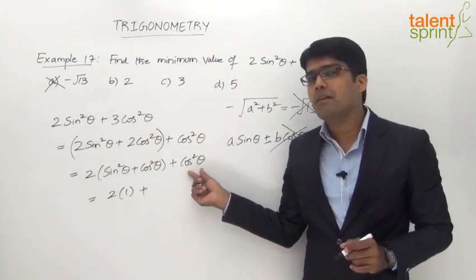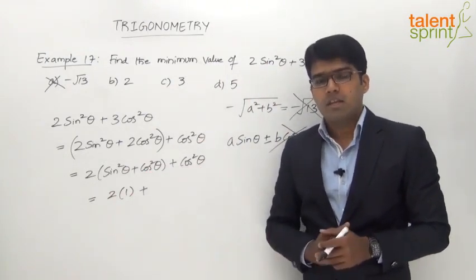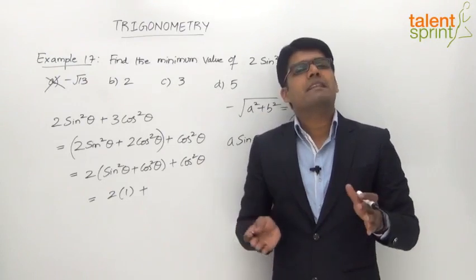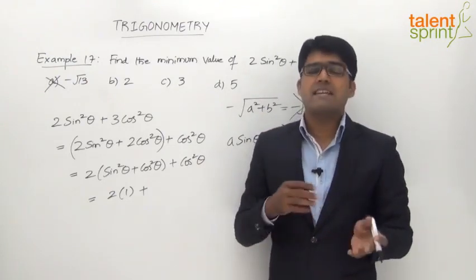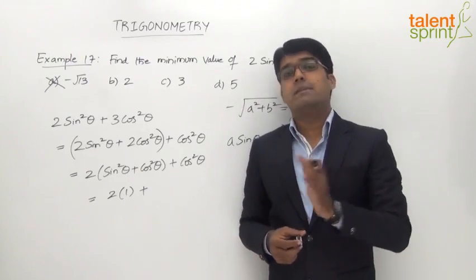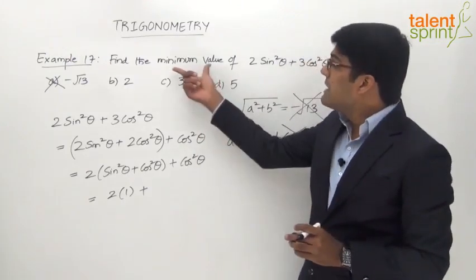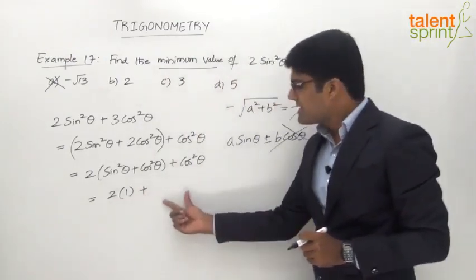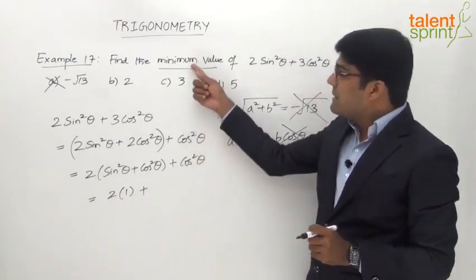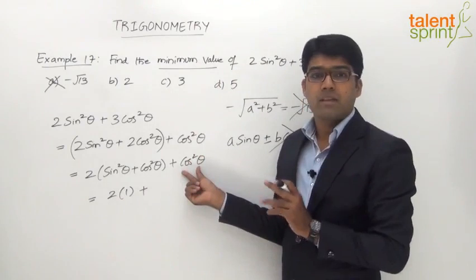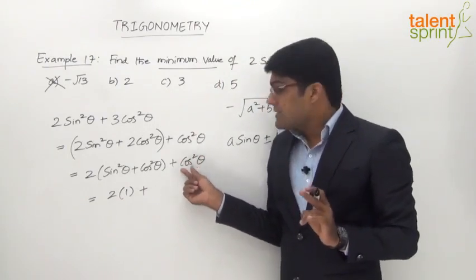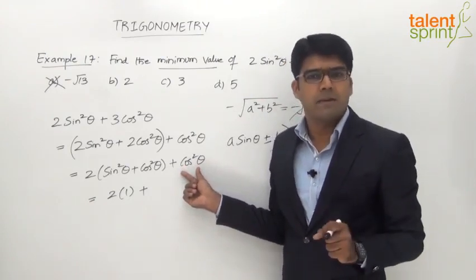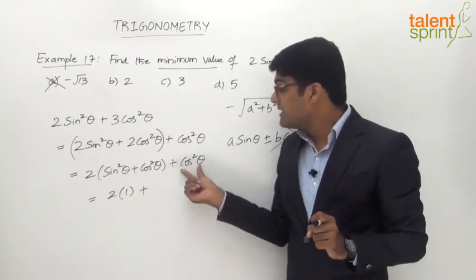So the expression becomes 2·(1) + cos²θ = 2 + cos²θ. Now, what can be the minimum value of cos²θ? If you observe the values of cosθ for various angles, cosθ is between −1 and +1. Both sinθ and cosθ have a minimum of −1 and maximum of +1. However, this is cos²θ, not cosθ. cos²θ cannot be a negative value — it must be a positive value or zero. So the minimum value of cos²θ is 0, which occurs when θ = 90°, since cos²(90°) = 0.